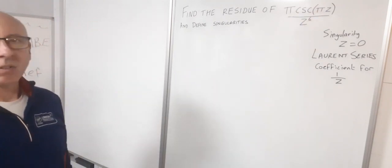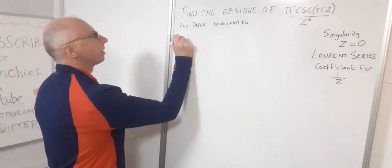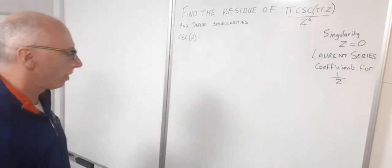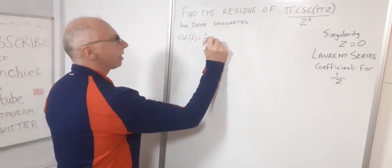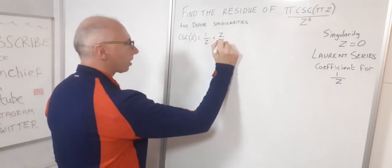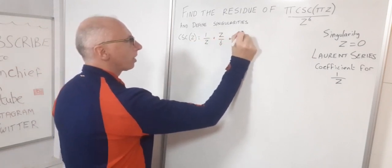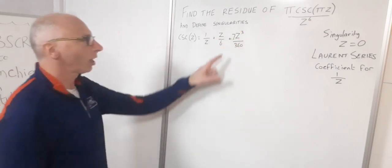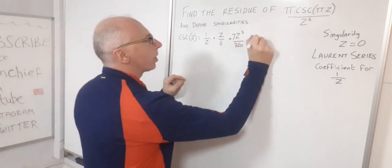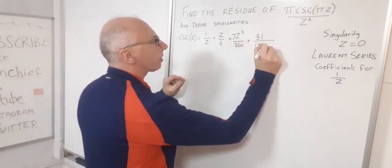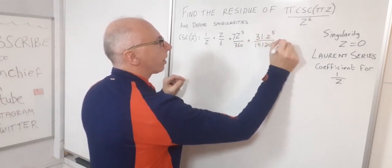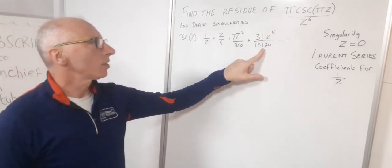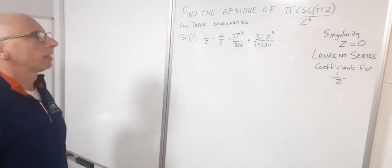So what we do know is that the Laurent series for cosecant of z has a Laurent series of 1/z + z/6 + 7z³/360 + 31z⁵/15,120 and so on. So as we're looking for the z to the 6, I feel we're safe to stop at this term here.